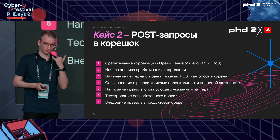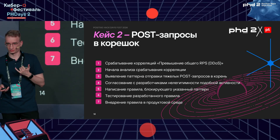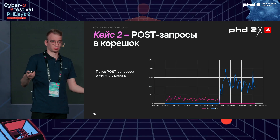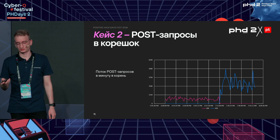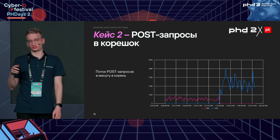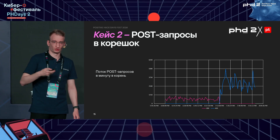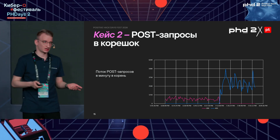We identified the pattern, called the developers, asked if this was expected — they said no, it's not how they designed it. We developed a short rule to block this POST request, fine-tuned it, and deployed it in the production system just in time. Because pretty much at the moment we deployed it, the attackers started getting serious and the number of such requests was reaching 5,000 per minute. Had we not responded in time, the application would have been taken down.